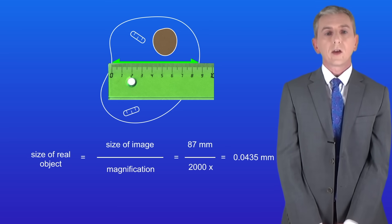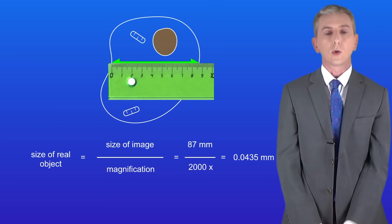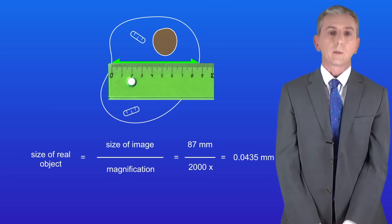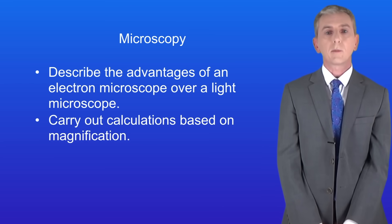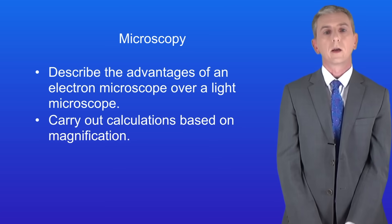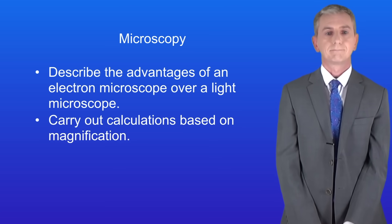Remember you'll find plenty of questions on microscopes and magnification in my revision workbook and you can get that by clicking on the link above. Hopefully now you should be able to describe the advantages of an electron microscope over a light microscope, and carry out calculations based on magnification.